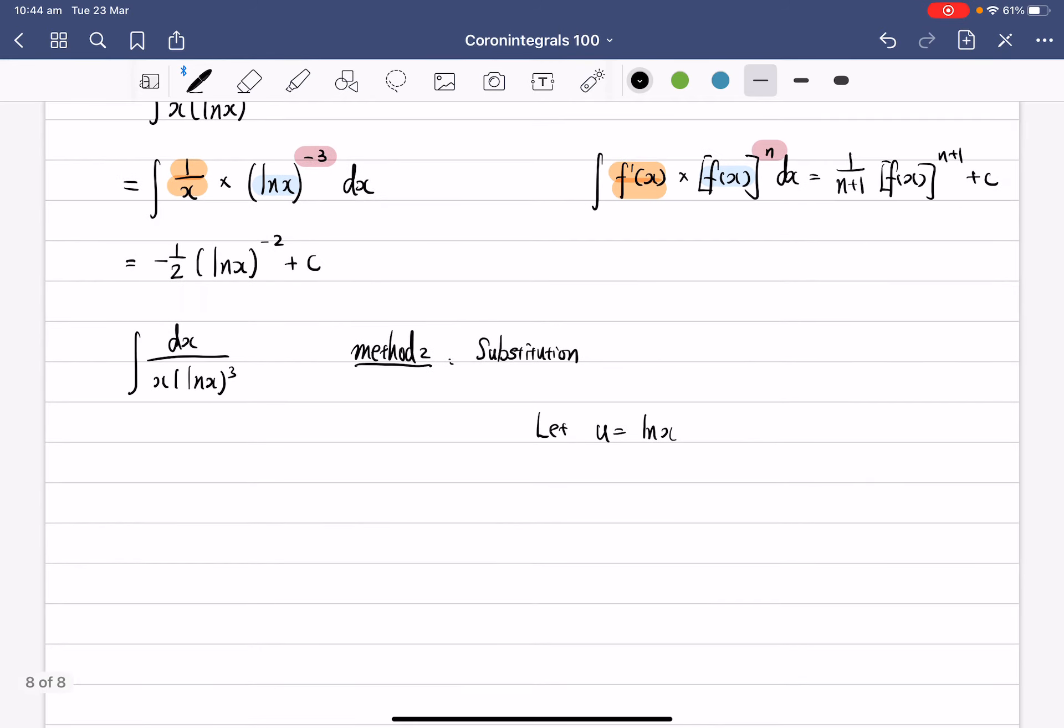All right, and since we know that the derivative of u is equal to 1 over x dx, we've got everything we have. Now we can just replace the dx by the du. So let's rearrange this. We've got 1 over x times lnx to the power of minus 3 dx.